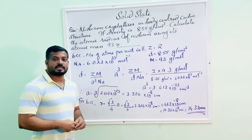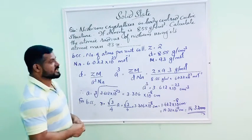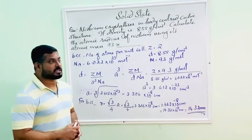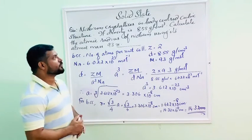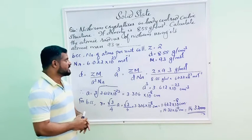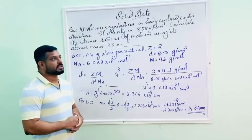Next problem. Niobium crystallizes in body centered cubic structure. If density is 8.55 gram per centimeter cube, calculate the atomic radius of niobium using its atomic mass 93U, unified mass.